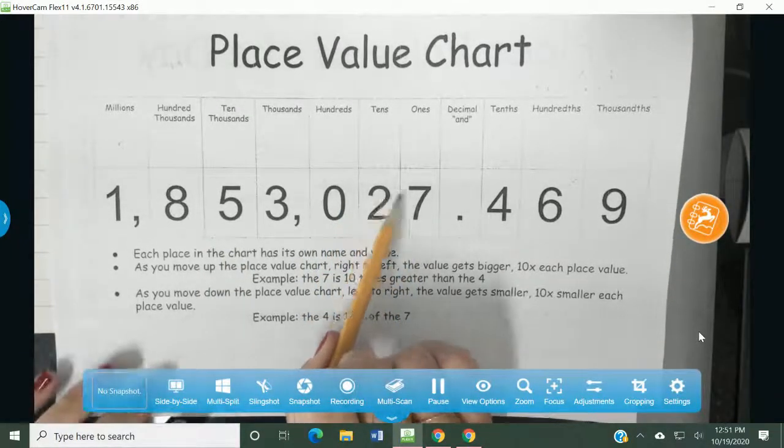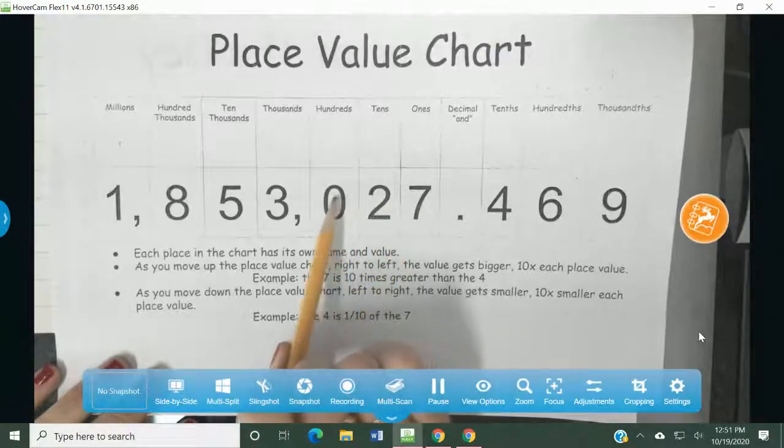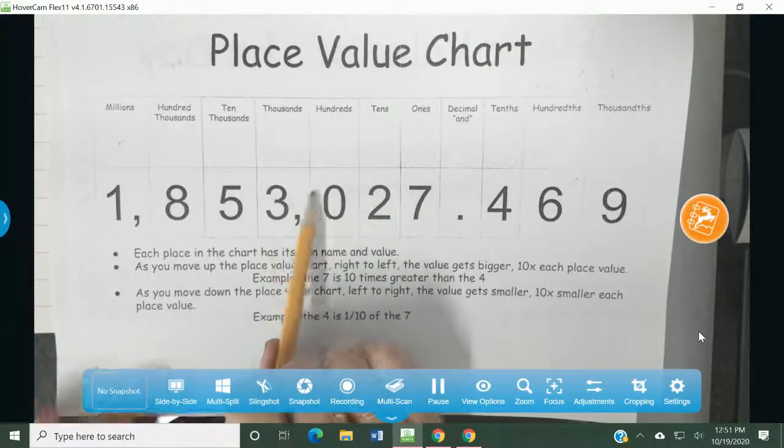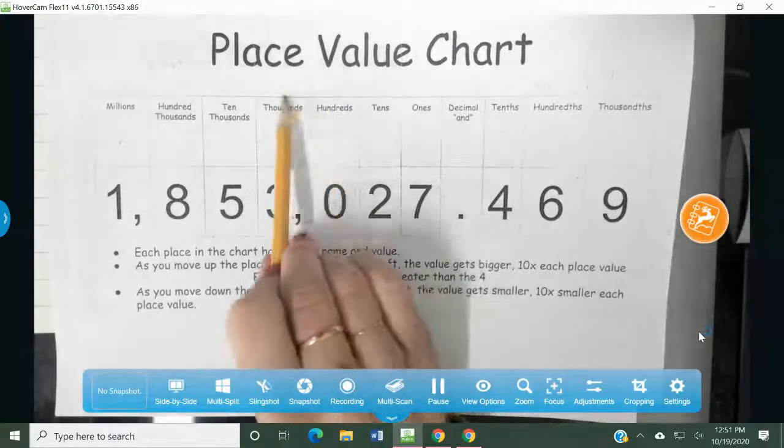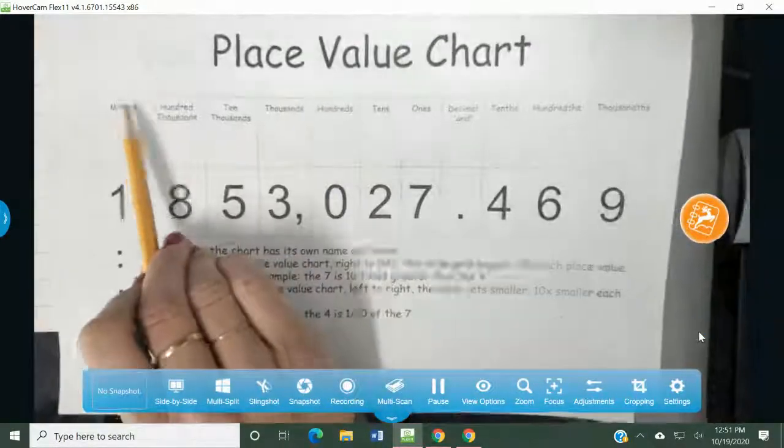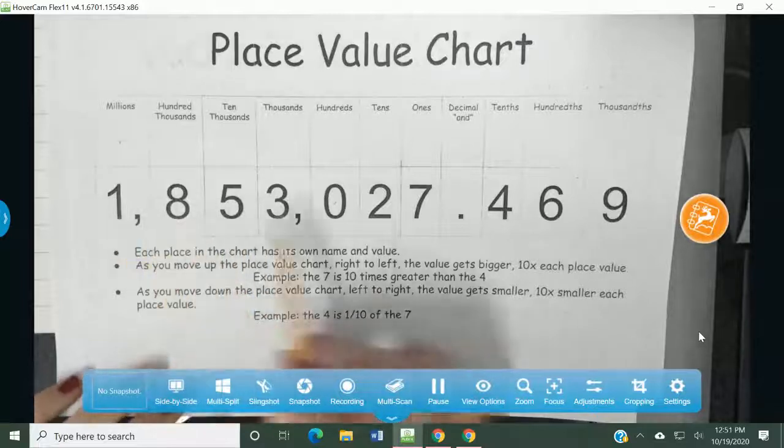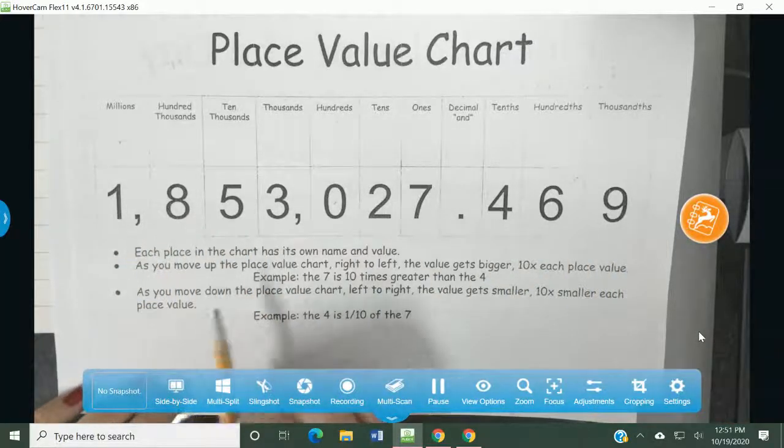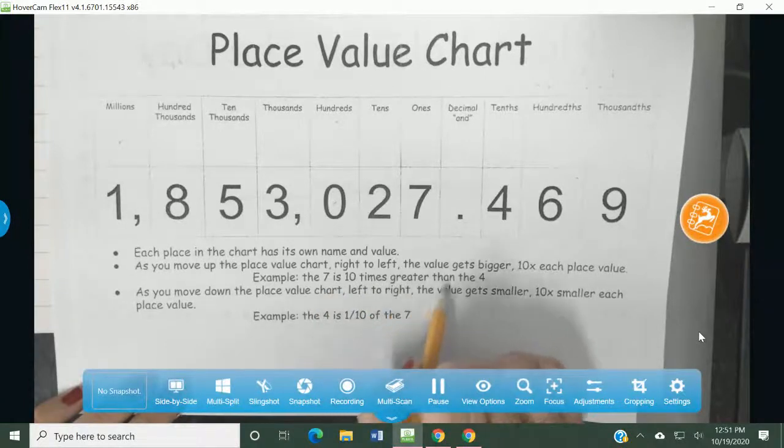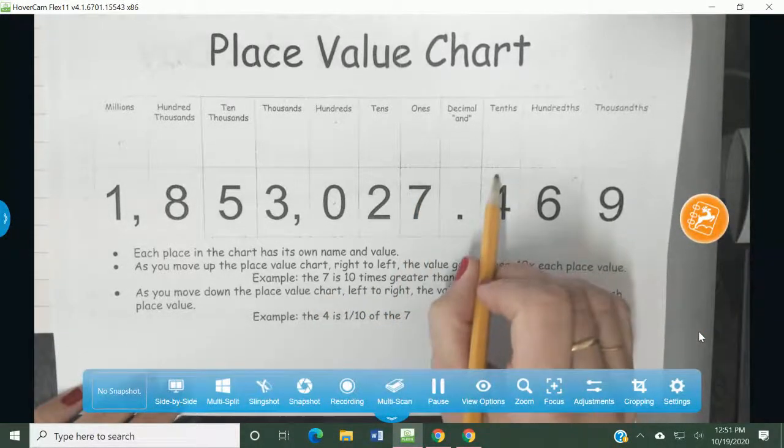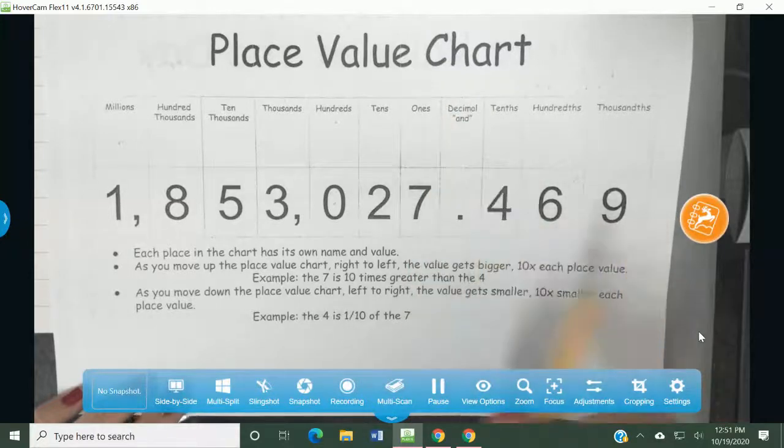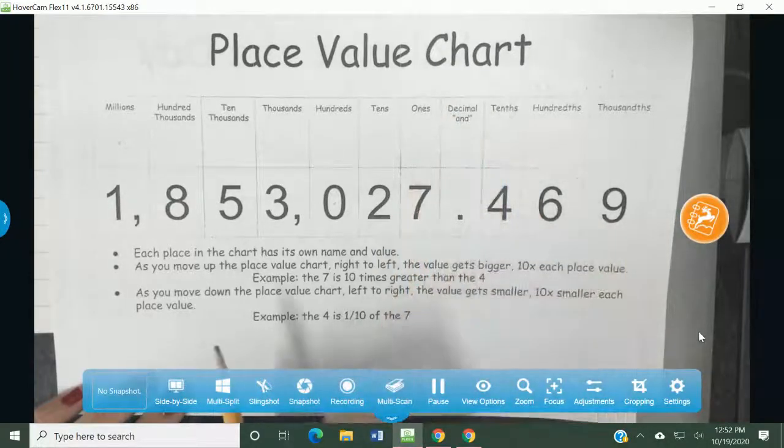So the two is ten times bigger than this seven. This three is ten times bigger than this zero. It's ten times bigger because you're jumping up a place value chart. It doesn't have really anything to do with the actual digit. So example, the seven is ten times greater than the four. This seven is ten times greater than this four because it is up a place value chart or up a place value spot on the chart.